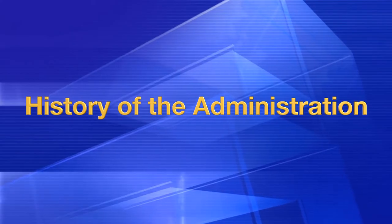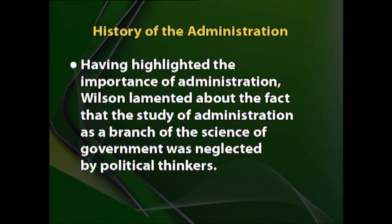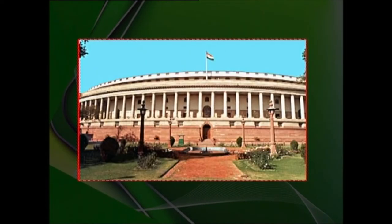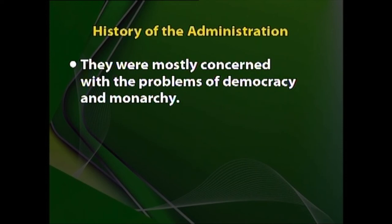Having highlighted the importance of administration, Wilson lamented that the study of administration as a branch of the science of government was neglected by political thinkers. Politicians and political scientists were talking about government and the constitution, but not studying the importance of administration. He says public administration is the latest fruit of the political science tree, meaning public administration depends upon the political system and the government. Political scientists mainly concentrated on constitution, nature of state, sovereignty, and popular powers, but not on administration.